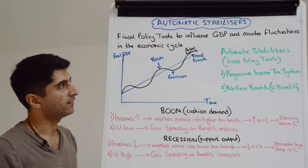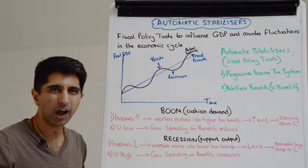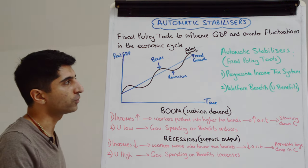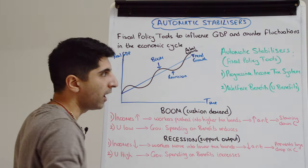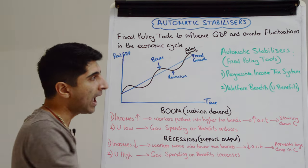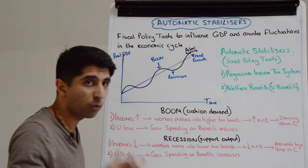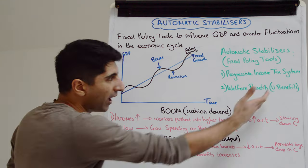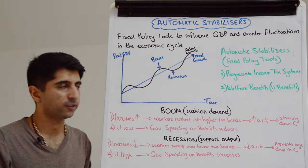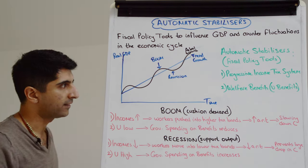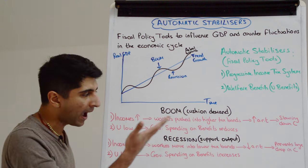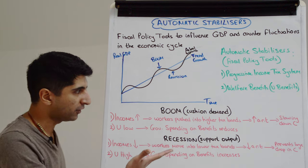So what are the automatic stabilizers? What are these fiscal policy tools? Well, an economy needs to have a progressive income tax system and welfare benefits — mainly unemployment benefits — that we're going to focus on in our analysis. Let's see how these come into play in a boom and then in a recession.